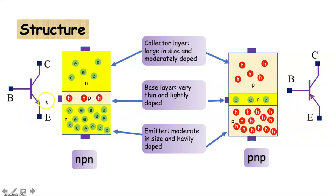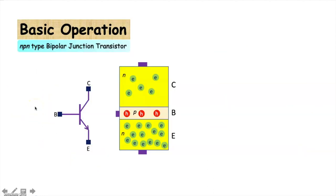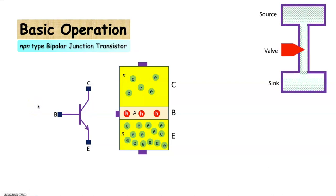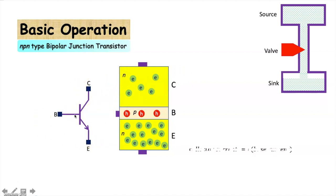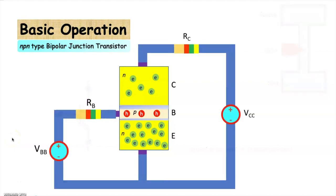The position of the arrow mark will distinguish between NPN and PNP. The basic operation of a BJT can be compared with the operation of a flow control valve, as shown here. The flow of liquid from source to the sink can be controlled by the position of this valve. Similarly, in a BJT, the current from the collector to the emitter can be controlled by the current through the base. Hence, the collector current may be represented as a function of the base current. For proper operation of the transistor, the two PN junctions must be biased properly with external voltages.